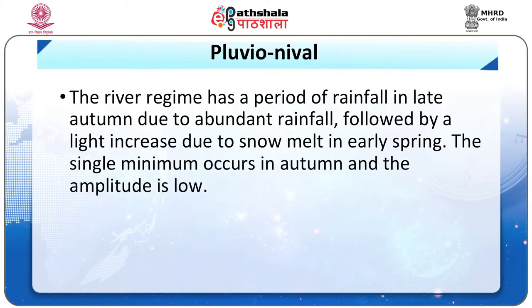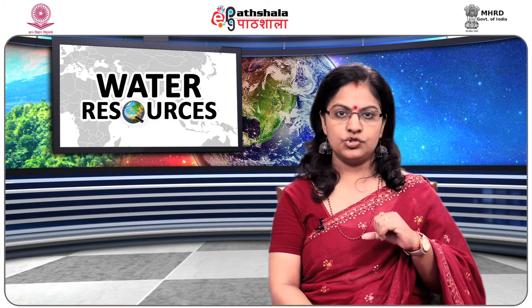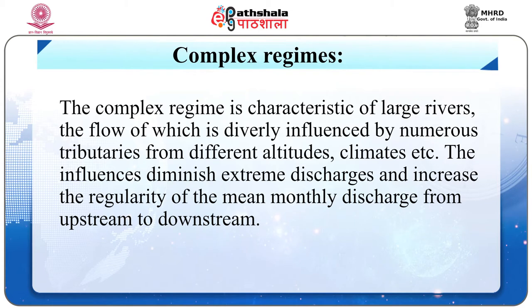The pluvial-nival river regime has a period of high flow in late autumn due to abundant rainfall, followed by a light increase due to snow melt in early spring. The single minimum occurs in autumn and the amplitude is low. The complex regime has a flow that is diversely influenced by numerous tributaries from different altitudes and climates. These influences diminish extreme discharges and increase the regularity of mean monthly discharge from upstream to downstream.